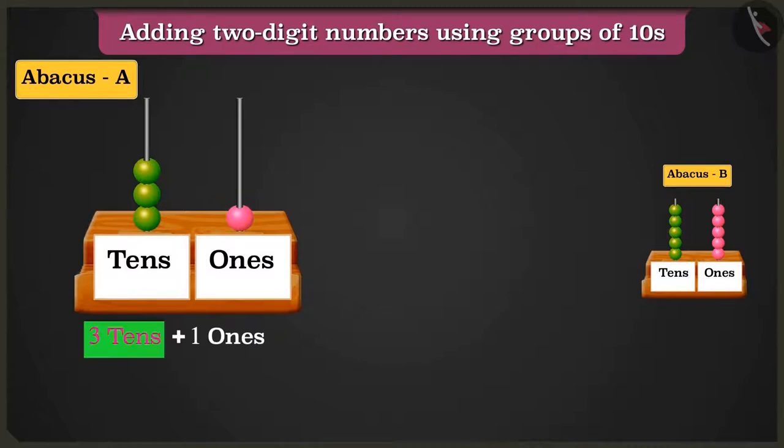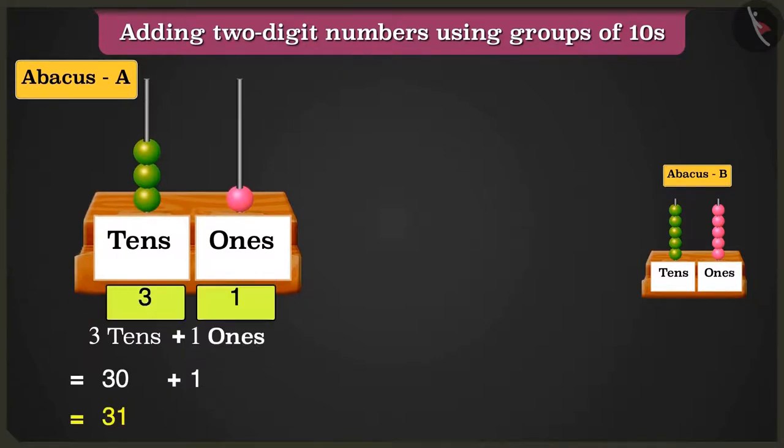So adding 3 tens, that are 30, and 1 one, that is 1, will be equal to 31.